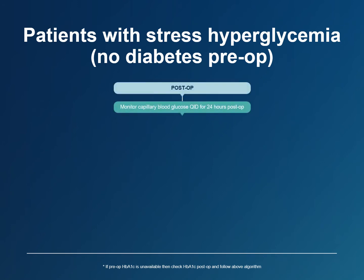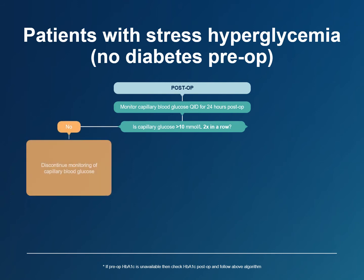For the first 24 hours after surgery, all patients without pre-existing diabetes should still have their capillary blood glucose levels checked four times a day. As long as the capillary blood glucose does not exceed 10 millimoles per liter on two consecutive occasions, we can conclude that the patient does not have stress hyperglycemia and capillary blood glucose monitoring can be discontinued.